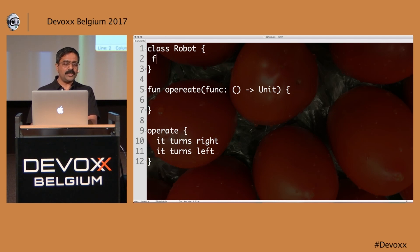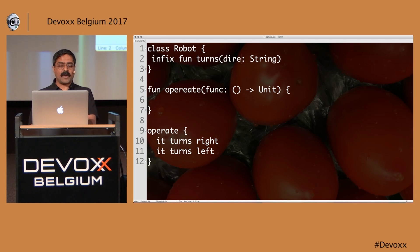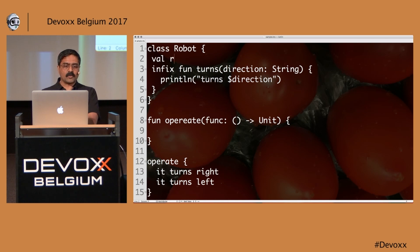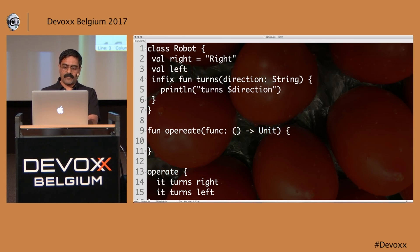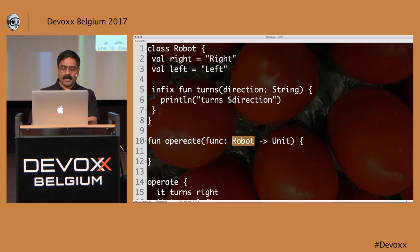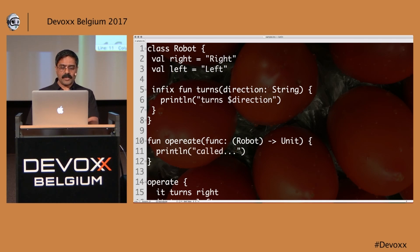I'll define 'val right = "right"' and 'val left = "left"'. The operate function takes a Robot and returns Unit. So now operate is called with that lambda. We'll say called inside and see what it does. So going forward, we can start creating some elegant DSL-like code with infix functions and lambdas together, building natural-language-style syntax in Kotlin.